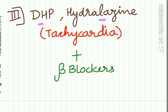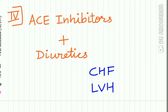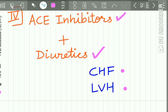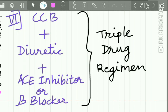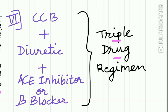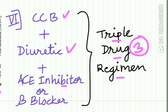The third combination: dihydropyridines and hydralazine cause tachycardia, so to counteract it, DHP and hydralazine are combined with beta blockers. The fourth combination: ACE inhibitors given with diuretics in cases of congestive heart failure and left ventricular failure. The fifth combination: ACE inhibitors and calcium channel blockers, which act with synergism. The last combination is a triple drug regimen using calcium channel blockers, diuretics, and ACE inhibitors or beta blockers.